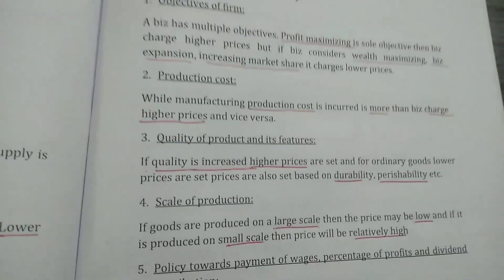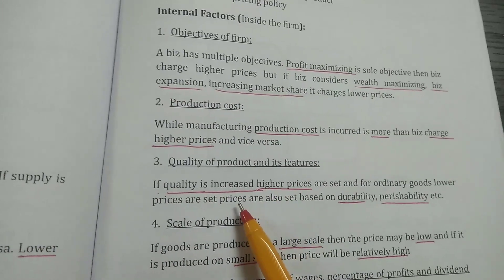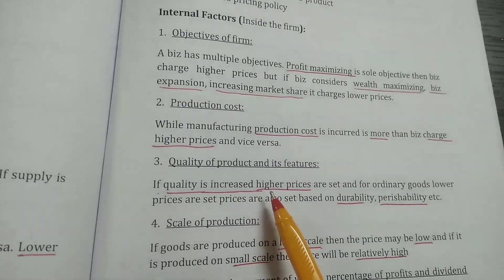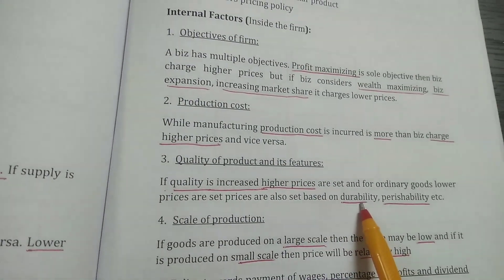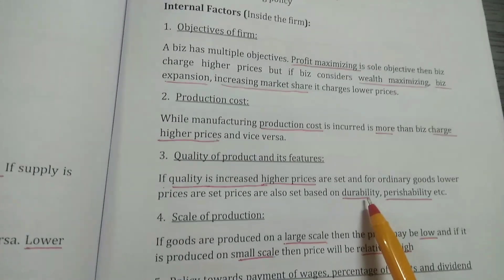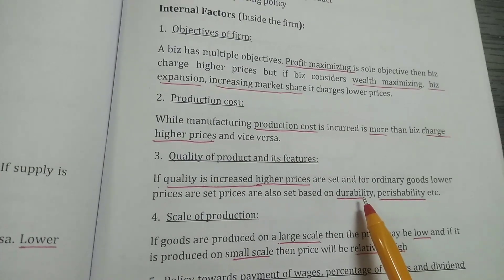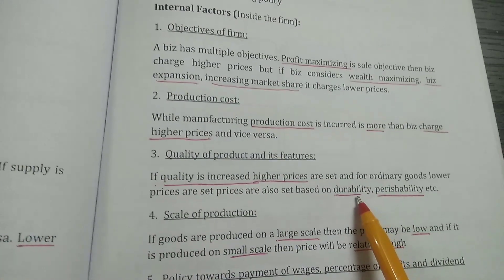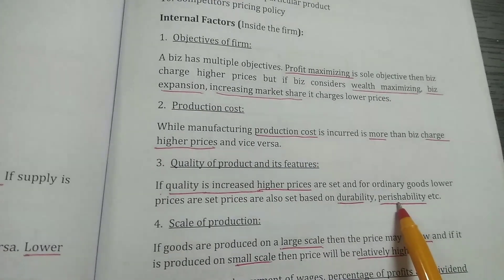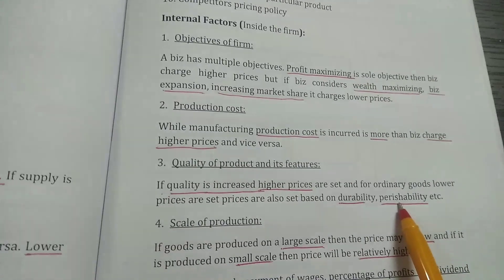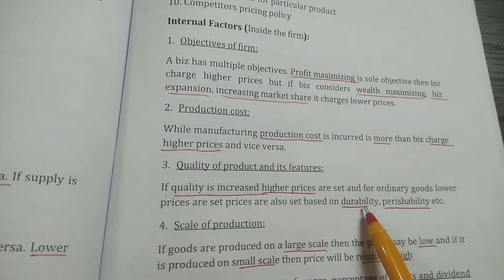The third factor is quality of the product and its features. If the quality is high, the company tries to fix higher prices. Sometimes the price is also fixed on the basis of durability and perishability. If the product has a longer life, the price will be more. If it is perishable — for example, fruits, vegetables, or flowers — high prices are not fixed because the durability is less.